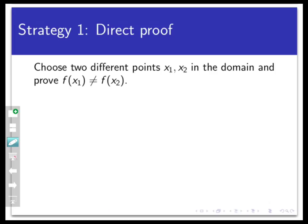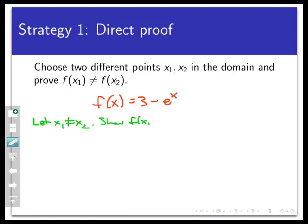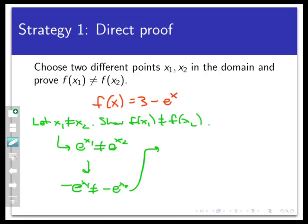Let's look at each strategy in turn using the same function. We're going to prove that f from ℝ to ℝ given by f(x) = 3 − e^x is an injection. For direct proof, we use the definition directly: assume x1 and x2 are two points in the domain and that x1 ≠ x2, then prove their images are unequal. So assume x1 ≠ x2. Then e^x1 ≠ e^x2, and since these two numbers are not equal, their negatives are not equal either. Adding 3 to two unequal things gives two unequal things, so f(x1) ≠ f(x2) and hence f is injective.